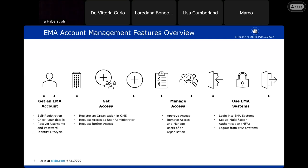After you get an account, you can check your details and recover your username and password. Your account is retained as long as you use it — if you don't use it for six months it will get disabled, and after a further six months it will be deleted. You can get access as an individual user, but mainly you can get access on behalf of an organization. The system managing organizations at EMA is OMS, the Organization Management System, which is part of the SPOR portal. Before getting access, we need to make sure your organization is listed in OMS.